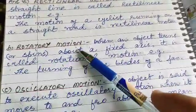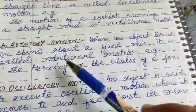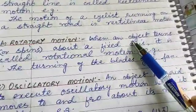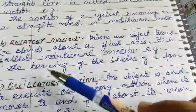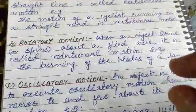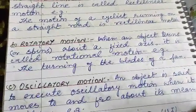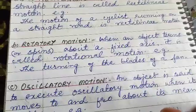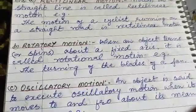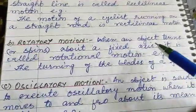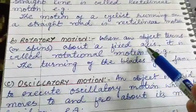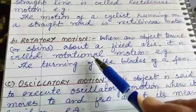Rotatory motion: when an object turns or spins about a fixed axis, it is called rotational motion. The object turns and spins about a fixed axis.